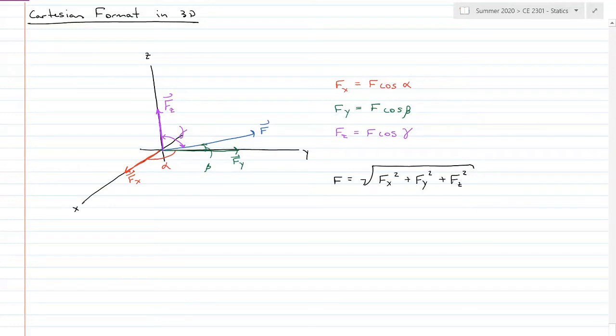Similar to 2D, I can represent a unit vector of my force with just the direction. That is cosine alpha i plus cosine beta j plus cosine gamma k.